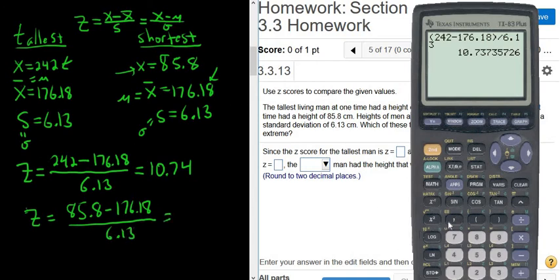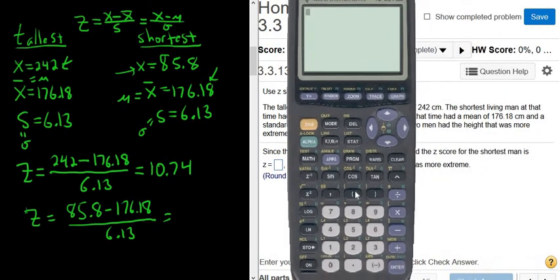So putting this in the calculator, let's try it. So it would be parentheses, 85.8, minus 176.18, parentheses, and then 6.13.